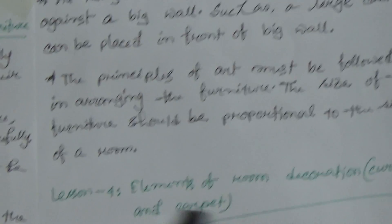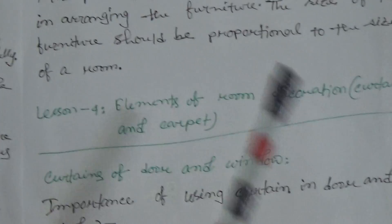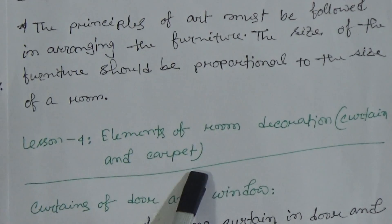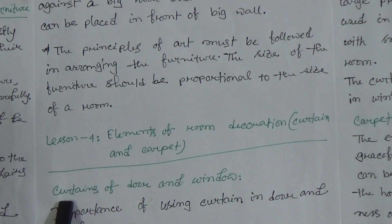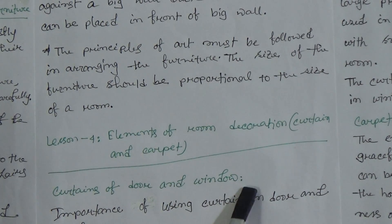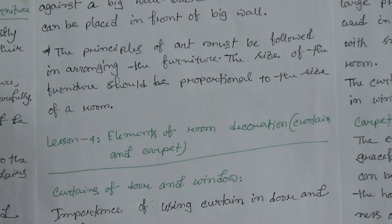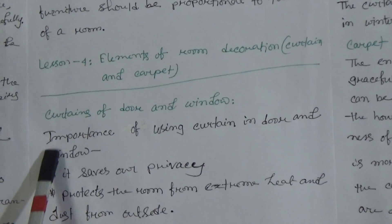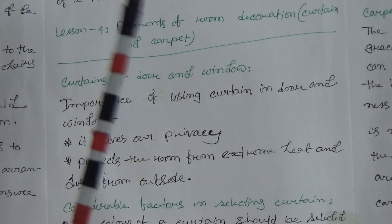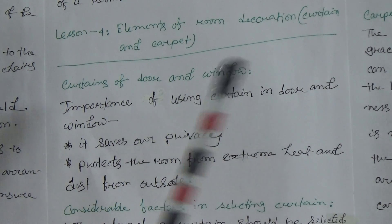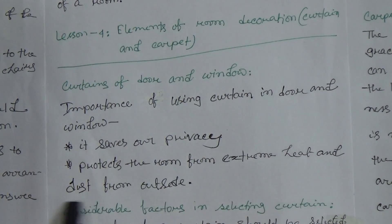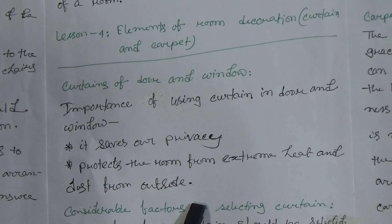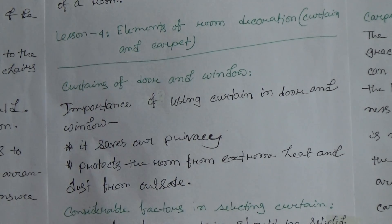Now Lesson 4: Elements of Room Decoration — Curtain and Carpet. First, curtains of door and window. The importance of using curtains in doors and windows: it saves privacy and protects the room from extreme heat and dust from outside.